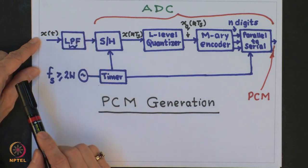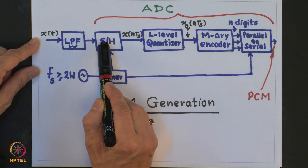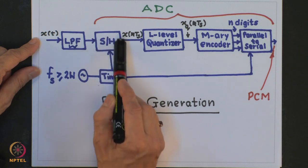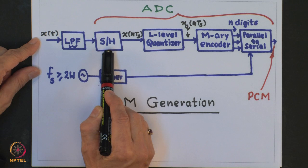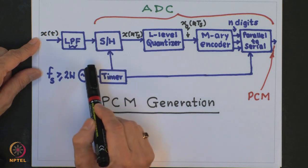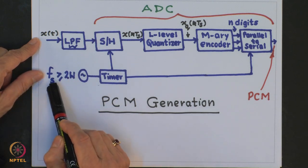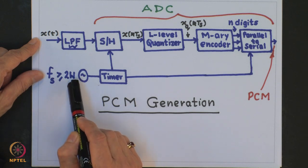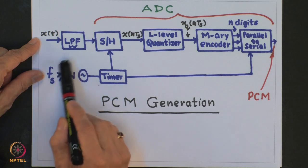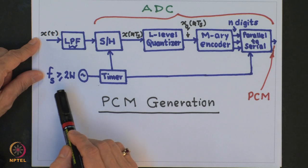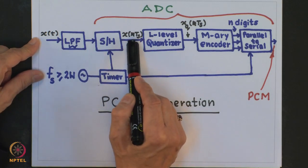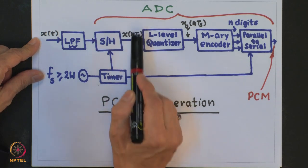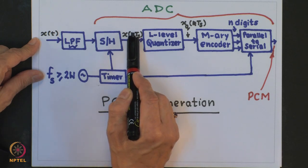This filter is also known as the anti-aliasing filter. The next block is called sample and hold, in which we carry out what is known as flat-top sampling. The sampling rate is decided by the Nyquist sampling theorem, which states that the sampling frequency should be greater than or equal to twice the bandwidth of the band-limited low-pass signal for perfect reconstruction. Usually, the sampling frequency is chosen higher than the Nyquist rate to provide a guard band against aliasing error. The output of this block is the discrete values sampled at time instants t = k·Ts.